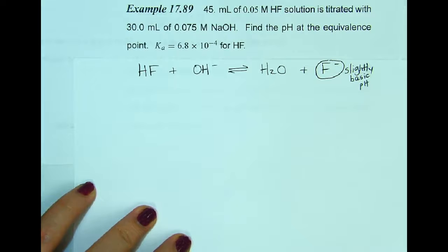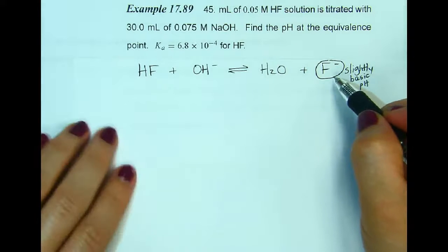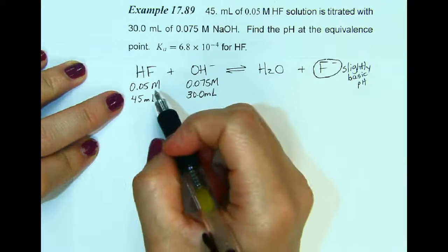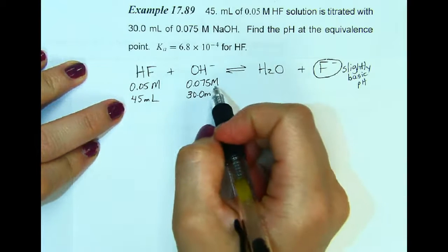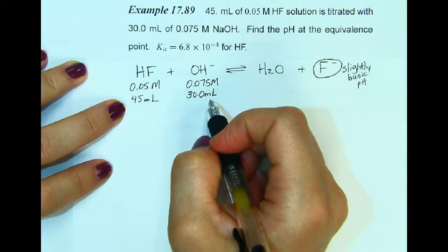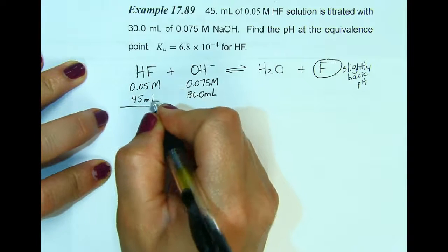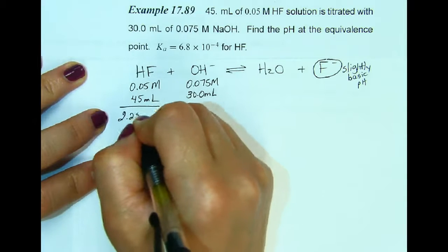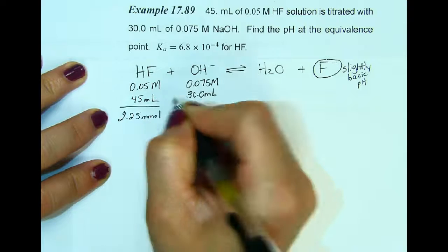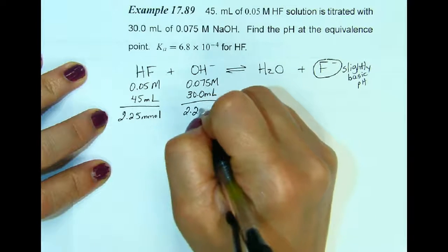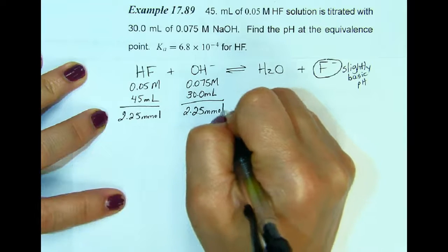So let's calculate how much of the fluoride ion we have after this reaction takes place. 0.05 molar in 45 milliliters is my hydrofluoric acid and 0.075 molar in 30 milliliters is my hydroxide. I'm going to multiply molarity times milliliters and this is going to give me 2.25 millimoles of hydrofluoric acid. And when I multiply these two, I'm going to also get 2.25 millimoles of hydroxide.